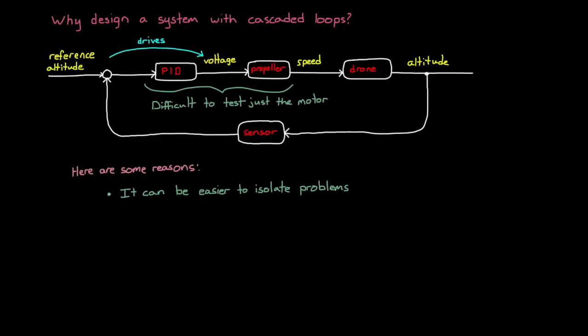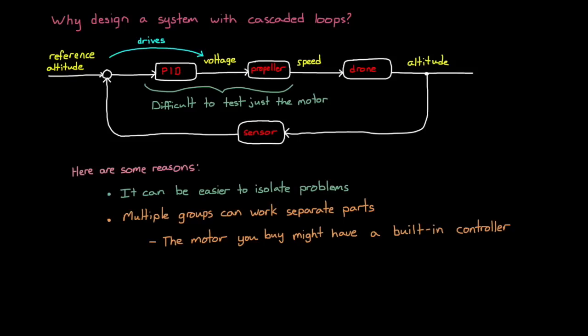With the cascaded loop scenario, we could run the motor controller closed loop and determine if the problem exists with the motor or with the rest of the system interacting with the motor. The second reason for cascaded loops is that multiple groups can work separate parts of the problem. One team might build and design the motor controller, while another team is responsible for the altitude controller. This is especially the case if you buy a motor with an integrated motor controller. The supplier that built the motor will have already designed the inner loop for you, and you just need to incorporate the outer loop around it. But a more important reason to have cascaded loops is to run them at different speeds to address different problems and sources of error.